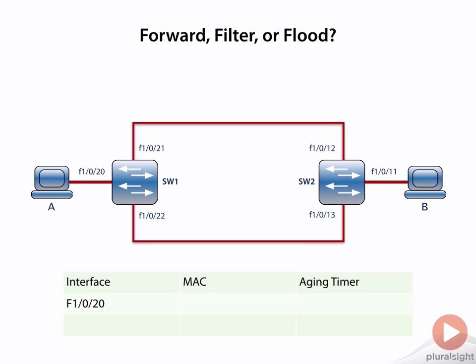So I've put a MAC address table there at the bottom of your screen, and you can see interface F1/0/20. That's where that PC that's labeled A is located in this example. So let's assume that that PC sends a frame on the network.